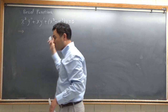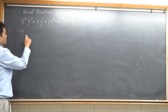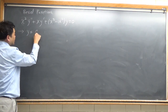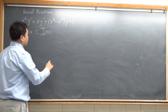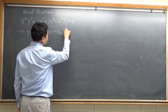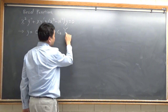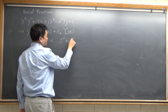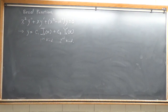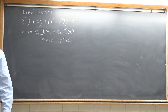So I want to talk about Bessel functions in general. The solution will always have the form of C1 times Jn of x — we call this the Bessel function of the first kind — plus C2 times Yn of x, which is the Bessel function of the second kind. It's just customary to use Jn for the first kind and Yn for the second kind.